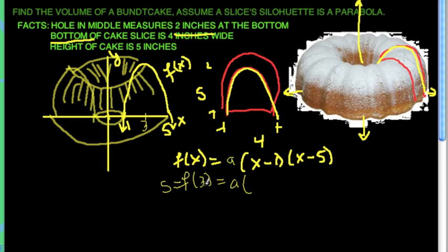Then when we put in x equals three, we get a times three minus one times three minus five. So five has got to equal, and this is plus two and this is minus two. So five has got to equal minus four times a or a equals minus five fourths.